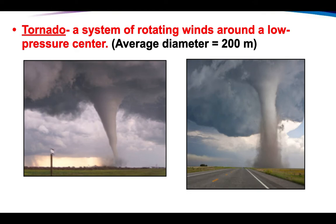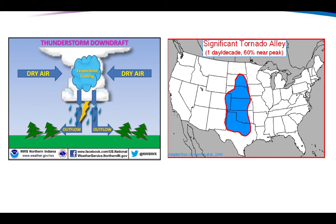Tornadoes are severe weather systems of rotating wind speeds around a low pressure center. Notice a difference here — both are rotating winds, but hurricanes are much larger, whereas a tornado's average diameter is typically much, much smaller. Hurricanes also last longer; tornadoes are quicker and typically don't last as long. In the central part of the United States, we call this location 'Tornado Alley.' During peak time of the year, there's usually about one tornado per day in that zone. We are now learning a lot more about tornadoes.